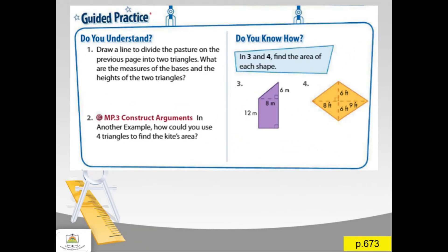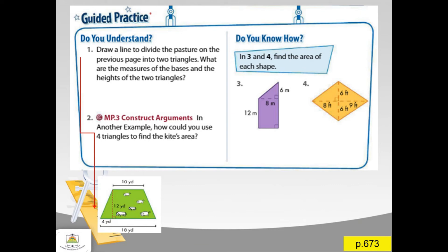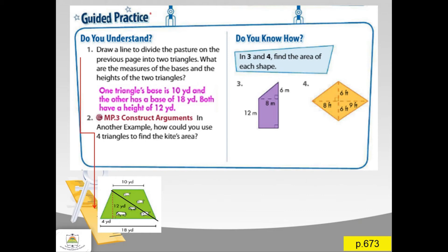Now we have a guided practice. Draw a line to divide the pasture on the previous page into two triangles. What are the measures of the bases and the heights of the two triangles? I draw a line here. One triangle's base is 10 yards, as you can see in the figure, and the other has a base of 18 yards. Both have a height of 12 yards.